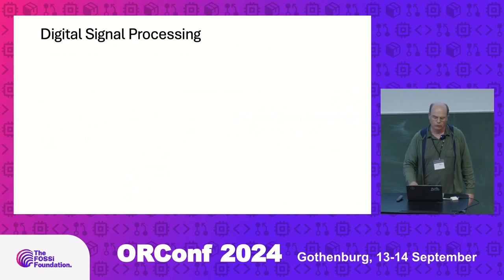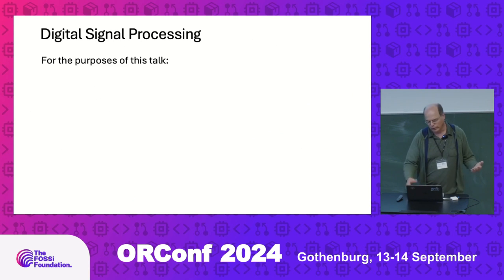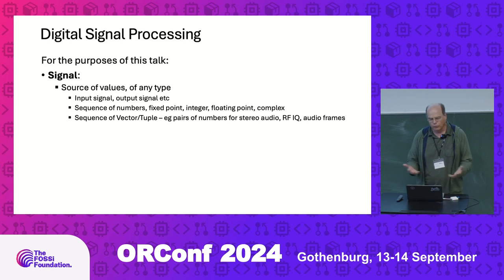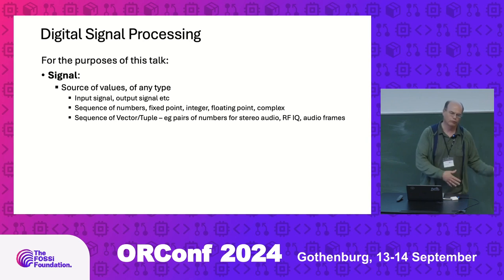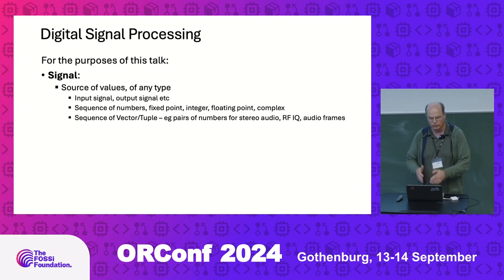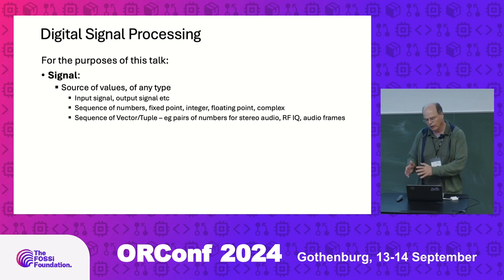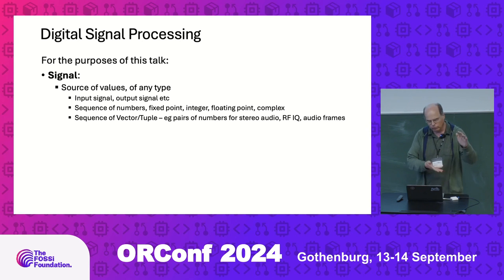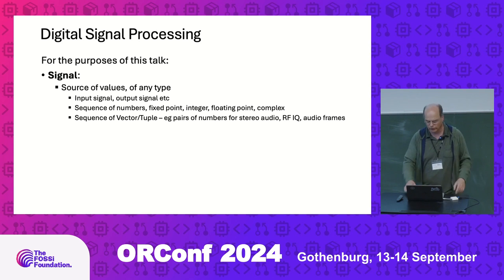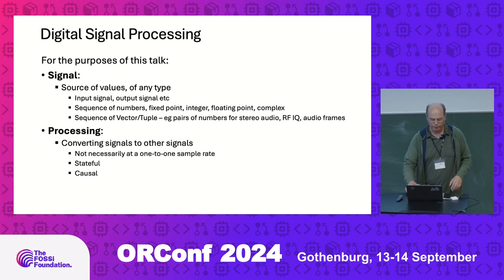For the purposes of this talk, digital signal processing: a signal is basically a sequence of numbers — a source of values. It could be your input signal, your output signal, an intermediate signal. The sequence of numbers could be fixed-point, integer, floating-point, or complex numbers. They can actually be short vectors or tuples, like pairs of numbers — for stereo audio you have left and right, I and Q in-phase quadrature for RF stuff. Audio frames are often processed in blocks at a time, like 64 or 128 samples.